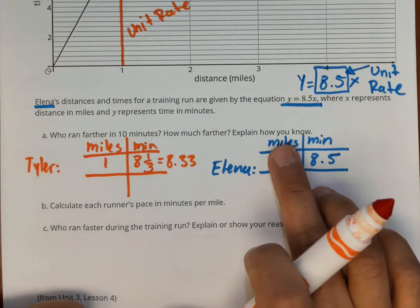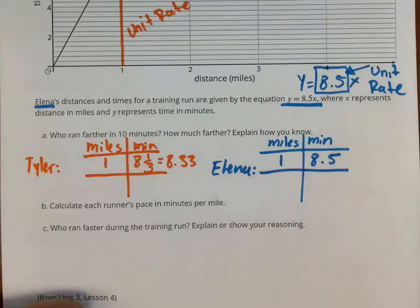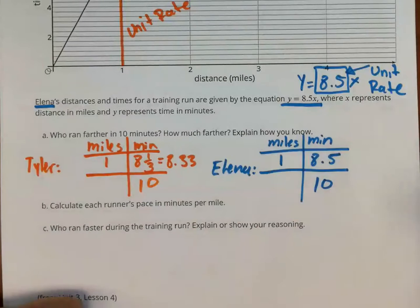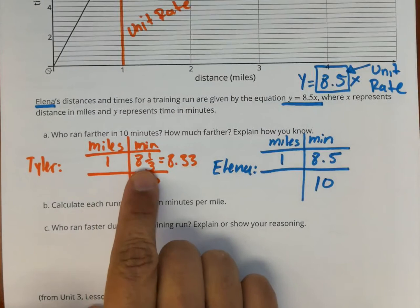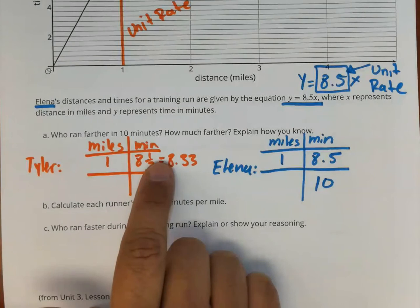Now the question is asking me for 10 minutes. So what I'm going to do is I'm going to put this row here for each one for 10 minutes. And what I need to do is basically what I'm looking for is with my unit rate, I'm going to multiply a number that gives me 10. So for Tyler, eight and a third times a number is going to be 10. So what am I going to do here? I'm going to divide 10 divided by eight and one third.